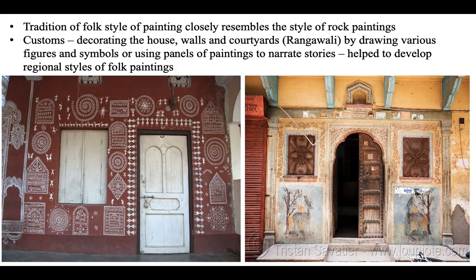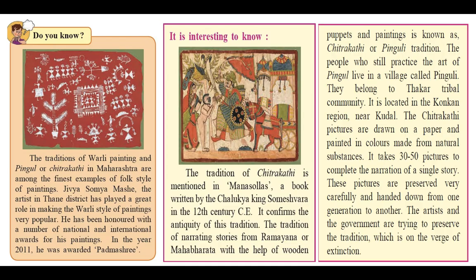The tradition of folk style of painting closely resembles the style of rock paintings — it is again related to people coming together to form a particular style. Customs such as decorating house walls and courtyards (Rangavali) by drawing various figures and symbols, or using panels of paintings to narrate stories, helped develop regional styles of folk paintings. These paintings depict common human life — people dancing in a circle, agricultural land with crops growing, or depictions of nature.